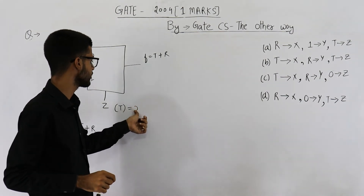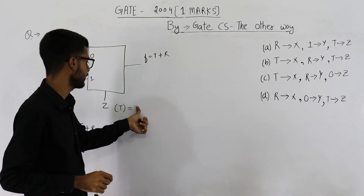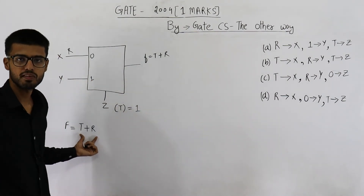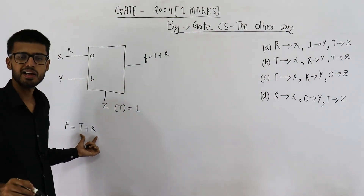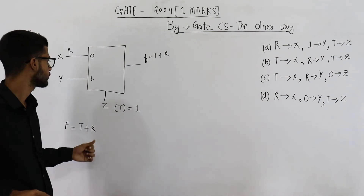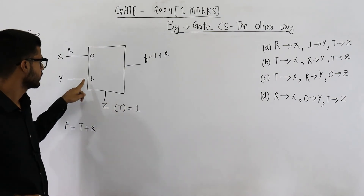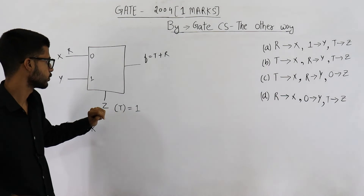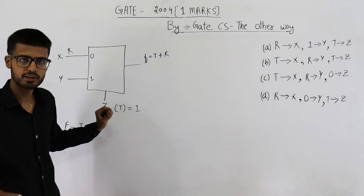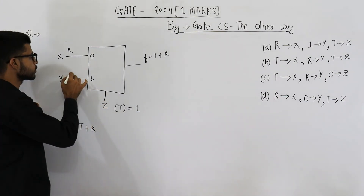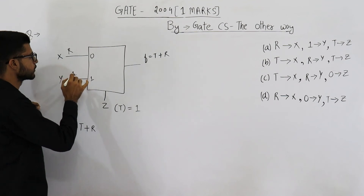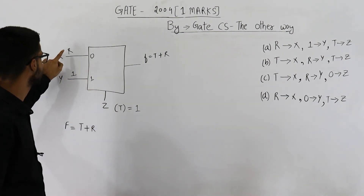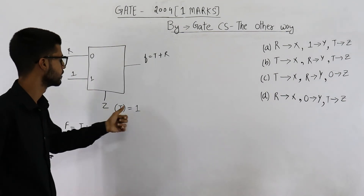And when the value of t is 1, in that case t + r will always be 1, irrespective of the value of r. When t is 1, y will be selected and given as output, but the required output is 1. That means y has to be 1. So the values of x, y, and z are r, 1, and t respectively.